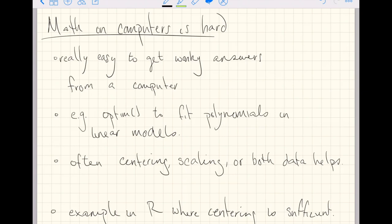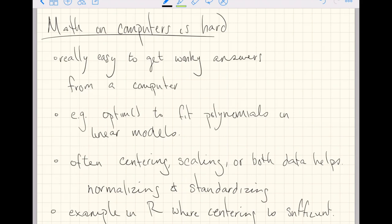Outside of this video, the words 'normalizing' and 'standardizing' are the words to look for. Normalizing generally means scaling your data so that it's between 0 and 1, and standardizing generally means first subtract off the mean and then divide that centered value by the standard deviation. I'll write those out on the next page in just a little bit.